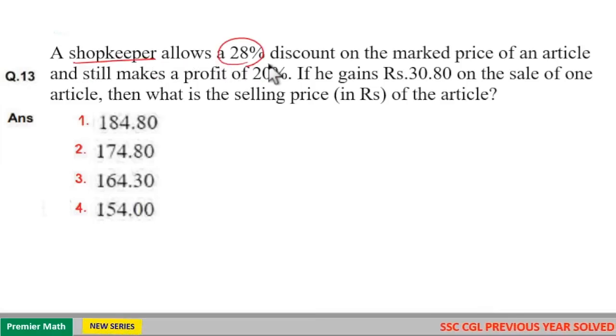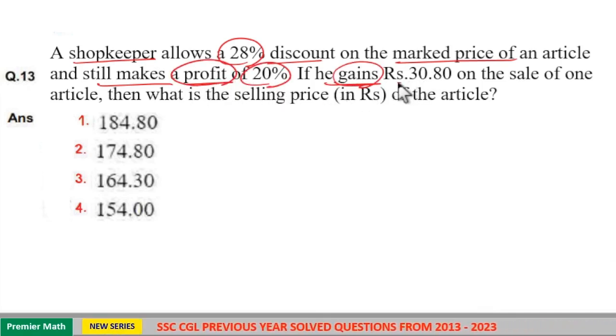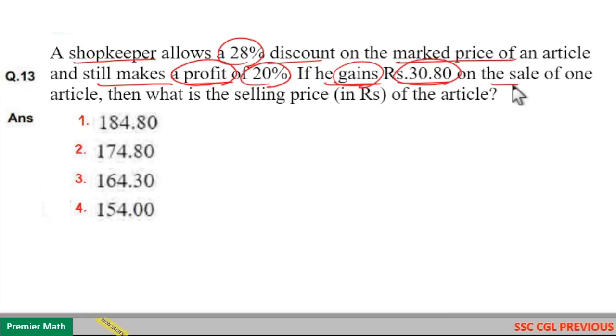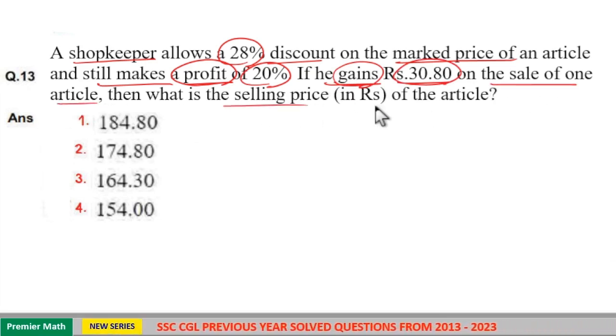A shopkeeper allows 28% discount on the marked price of an article and still makes a profit of 20%. If he gains 30.8 rupees on the sale of one article, then what is the selling price of the article?